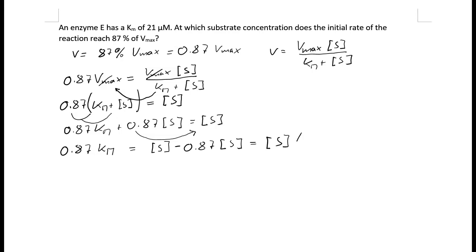times 1 minus 0.87. And that of course gives us 0.13. So we can write 0.13 times S equals 0.87 times Km.